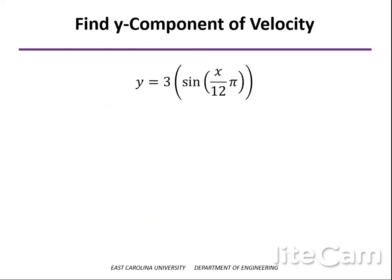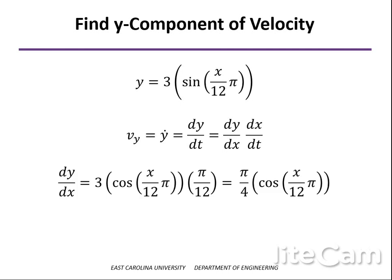We have an equation that relates the y coordinate to x. To find the velocity, we take the derivative of y with respect to time. Since y is given as a function of x and not of time, we use the chain rule: dy/dt equals the derivative of y with respect to x times dx/dt, which is the velocity in the x direction. Taking that derivative, the sine becomes a cosine, and the constant pi over 12 gets factored out.